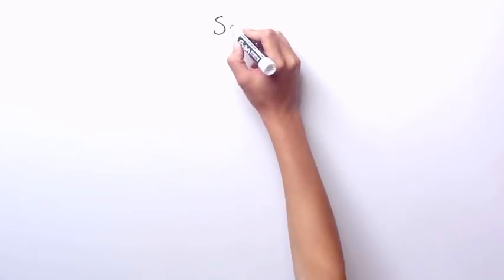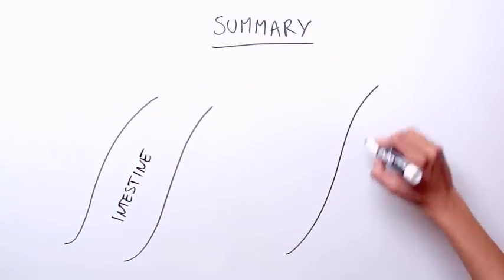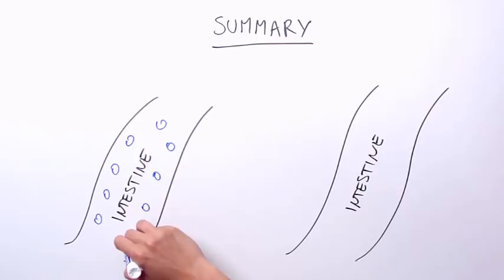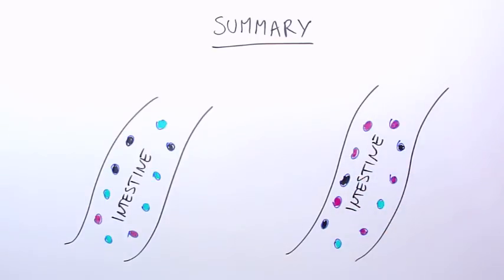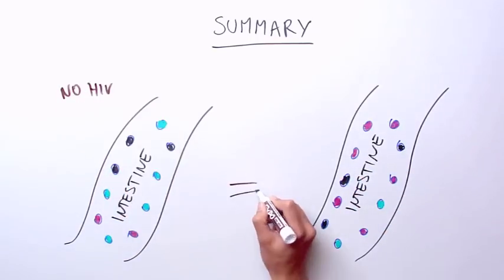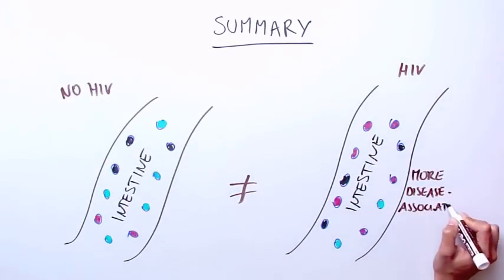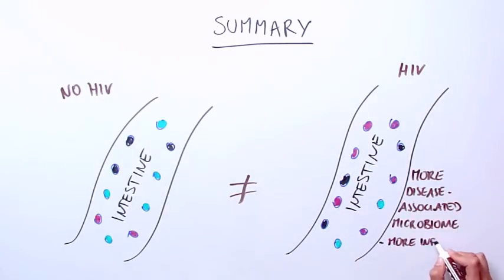So what did this study show? This study showed that the gut microbiome or the community of bacteria that live in the intestines of HIV patients is very different from that of uninfected patients. And individuals with a more disease-associated microbiome had more inflammation and more advanced disease.